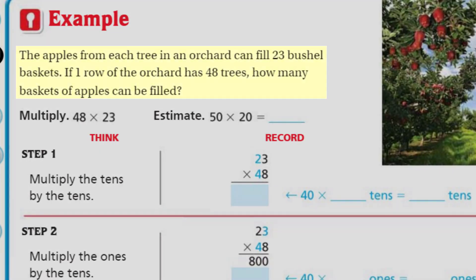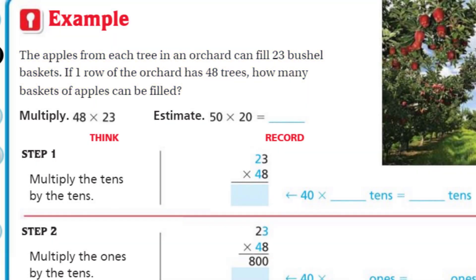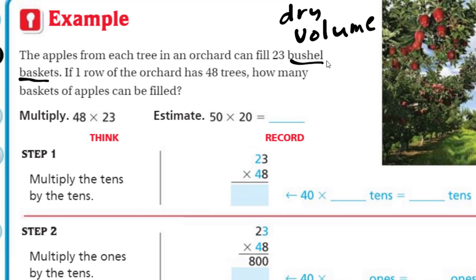Now here's a real-world problem. It says the apples from each tree in an orchard can fill 23 bushel baskets. If one row of the orchard has 48 trees, how many baskets of apples can be filled? Bushel baskets — this is just a unit of measure, not too common actually. It has to do with dry volume — it's a dry bushel.